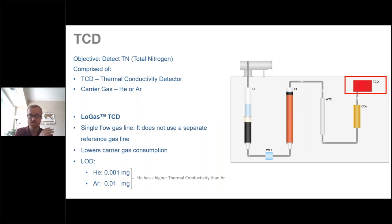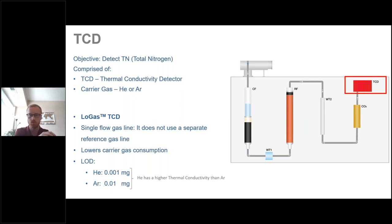The TCD — thermal conductivity detector — detects total nitrogen, with only nitrogen and the carrier gas (helium or argon) passing through. This is a low-gas TCD analyzer using a single flow gas line, so it does not use a separate reference gas line, saving on cost and consumable usage. The limit of detection is 0.001 mg of nitrogen with helium, or 0.01 mg of nitrogen with argon, due to helium's higher thermal conductivity.